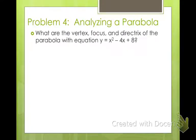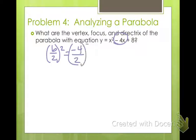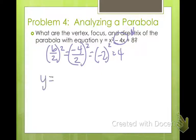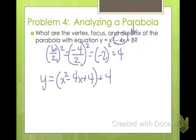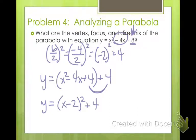To analyze the parabola y = x² - 4x + 8, we need to put it in vertex form by completing the square. Our b value is -4, so b/2 squared = (-4/2)² = 4. Rewriting: y = x² - 4x + 4 + 4, which factors to y = (x - 2)² + 4. Now it's in vertex form.